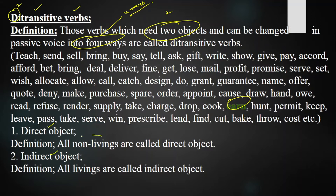Ditransitive verbs need one direct object and one indirect object. The direct object refers to all non-living things, while the indirect object refers to all living things. If you put only one of the objects, the meaning won't be clear and understandable.